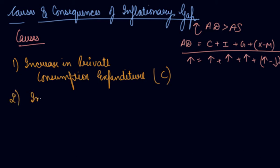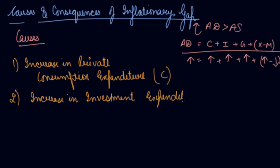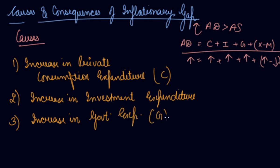Second, we have increase in investment expenditure. If there is an increase in investment expenditure, which means there will be an increase in aggregate demand. Third, we have increase in government expenditure. If your G as a component is increased, your aggregate demand will increase.